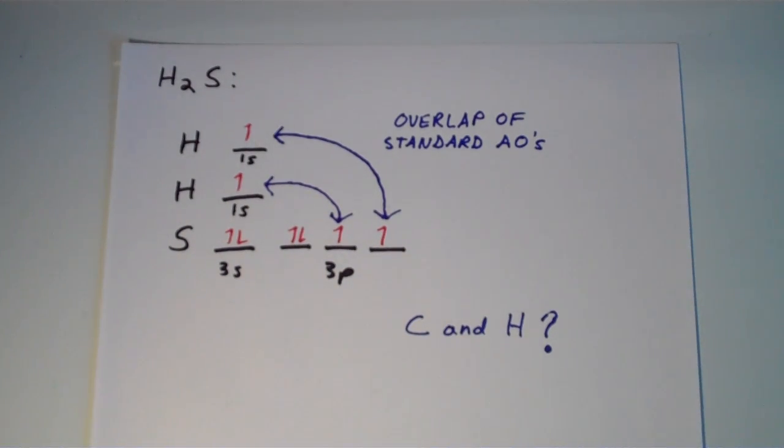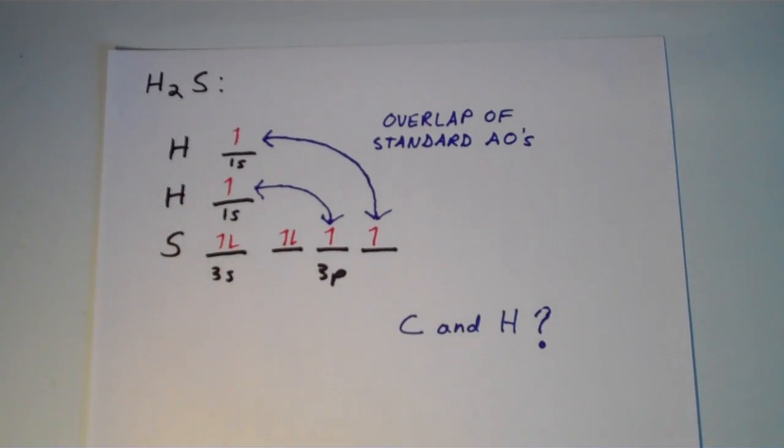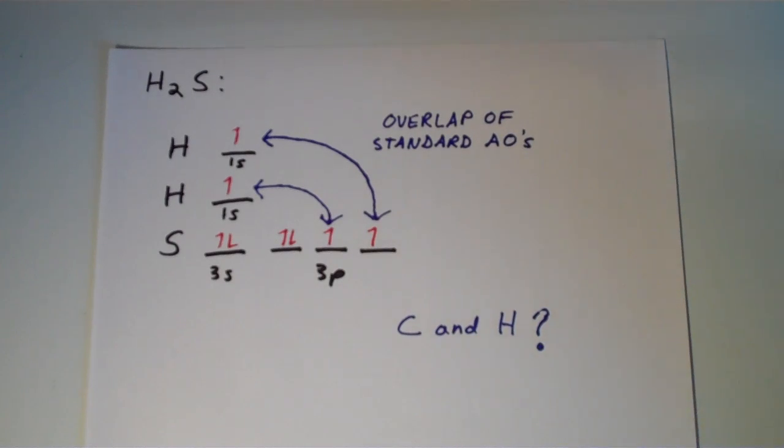But in this video, I'd like to demonstrate that the simple overlap of standard atomic orbitals treatment isn't always the best treatment. In fact, in many cases, it's not a good treatment at all. So I'd like you to consider the bonding of a compound that is composed only of carbon and hydrogen. If we apply a standard atomic orbital overlap treatment to a compound that is composed of carbon and hydrogen, what can we predict the bonding situation to be?